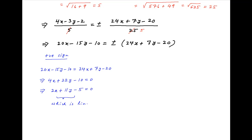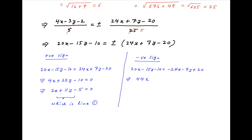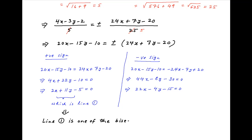Notice that this is the same as the equation of line 1. Therefore line 1 is a bisector of lines 2 and 3. Taking the negative sign, we obtain the equation of the second bisector: 20x minus 15y minus 10 equal to minus 24x minus 7y plus 20, which implies 44x minus 8y minus 30 equal to 0. To summarize, line 1 is one of the bisectors of lines 2 and 3, which is the required result.